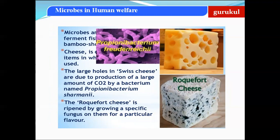There are different types of cheese depending on which microbe is used. One of the most important is Swiss cheese, recognized by the presence of large holes. Swiss cheese is produced by the bacterial action of Propionibacterium sharmanii. The large holes are produced because of the production of large amounts of carbon dioxide by Propionibacterium sharmanii.